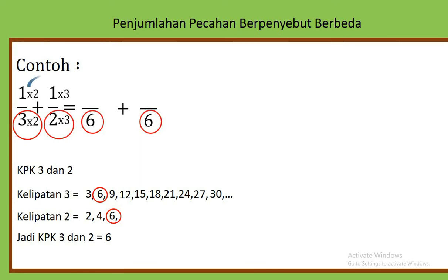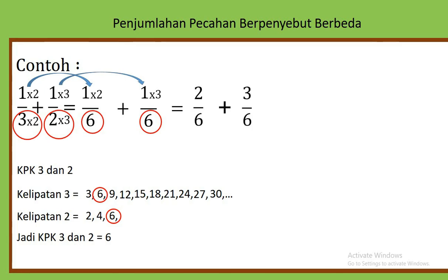Oke, 1 kali 2 kita letakkan di sini, 1 kali 3 kita letakkan di sini. Jadi 1 kali 2 adalah 2 per 6, ditambah 1 kali 3 adalah 3 per 6. Karena sudah sama-sama penyebutnya, otomatis bisa dijadikan 1. 2 ditambah 3, hasilnya adalah 5 per 6.